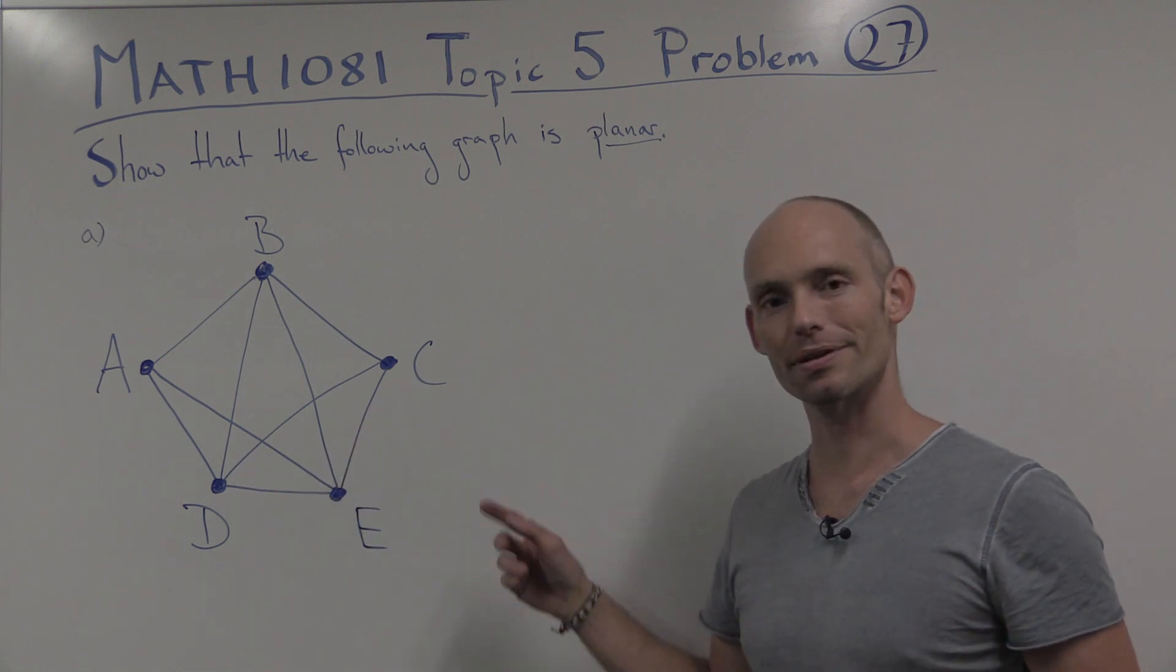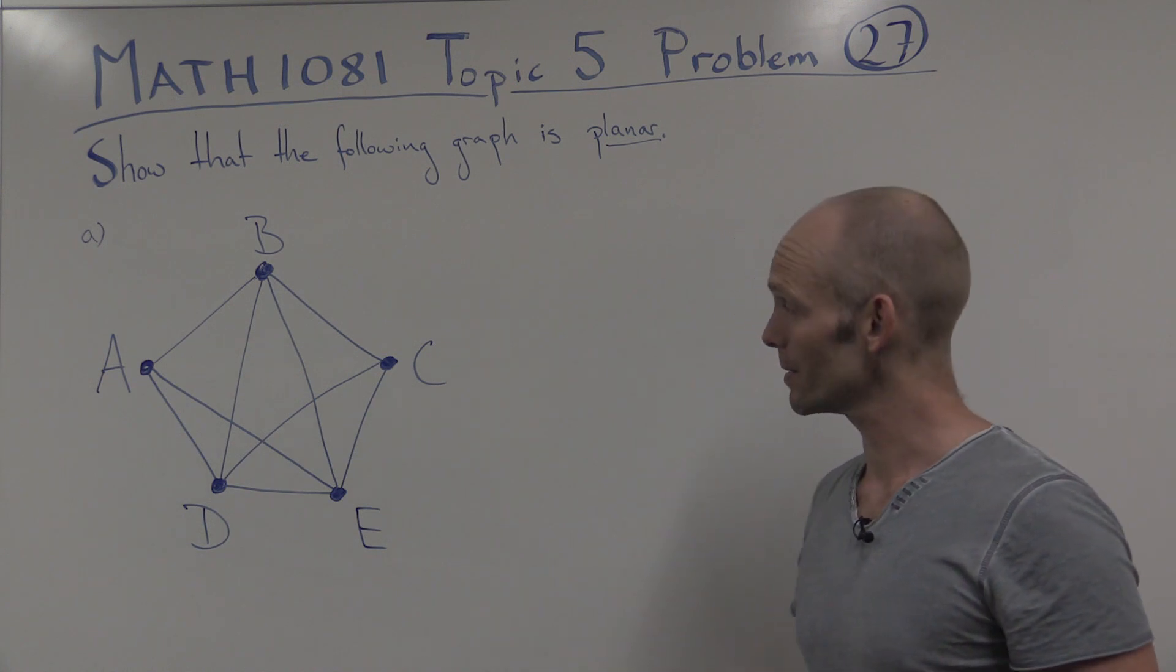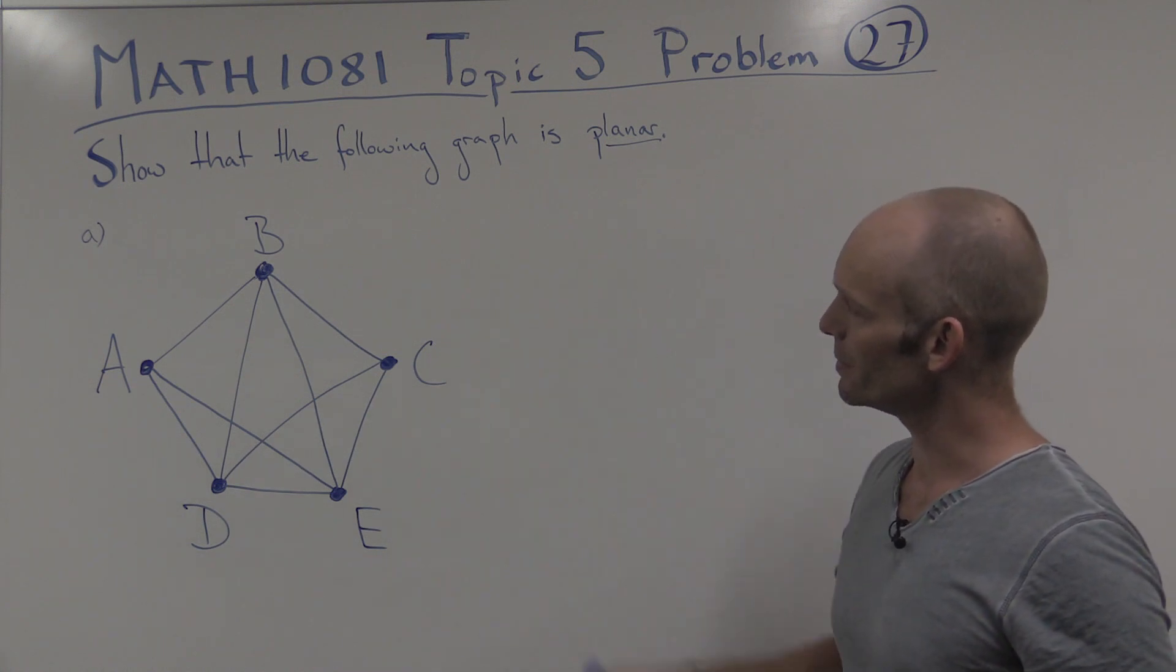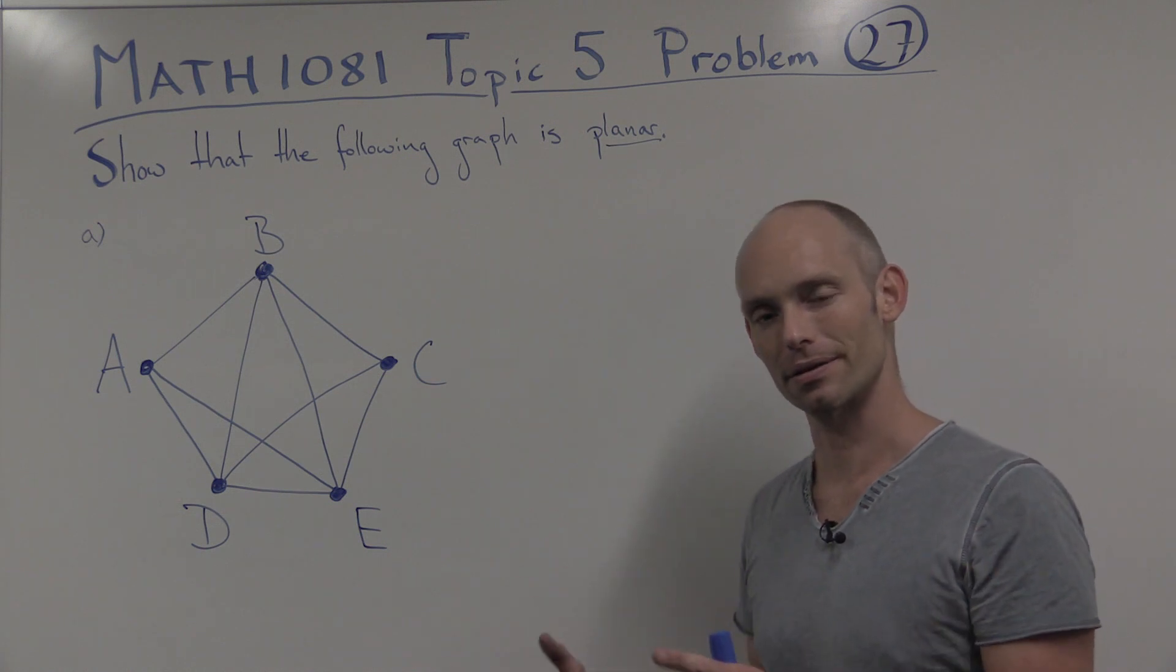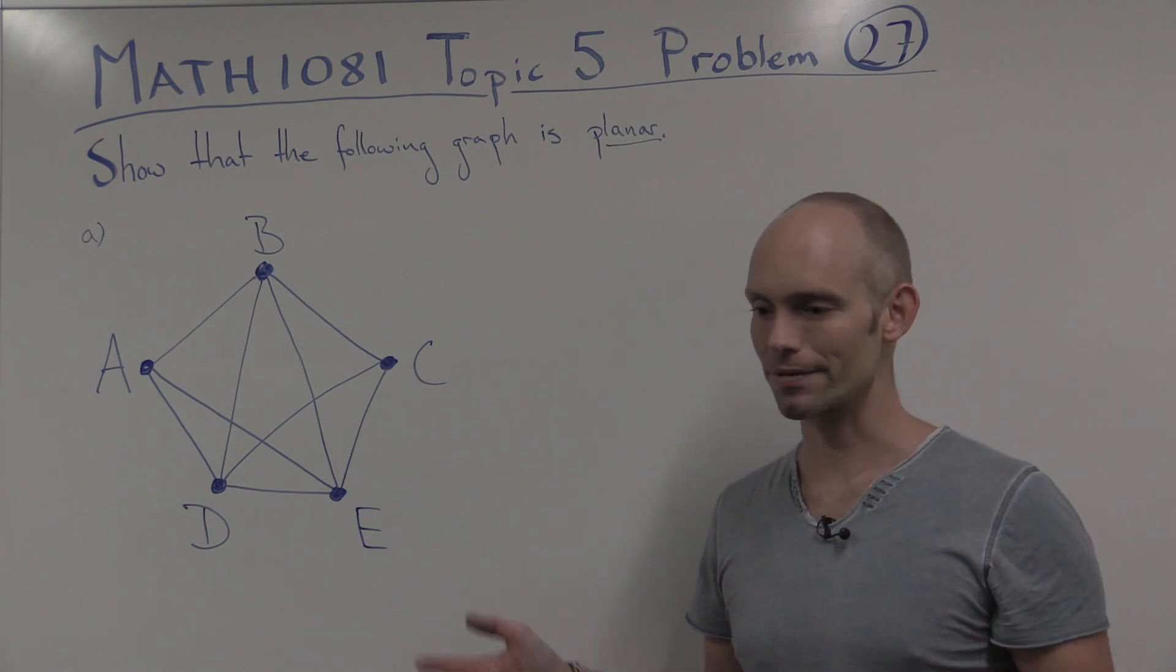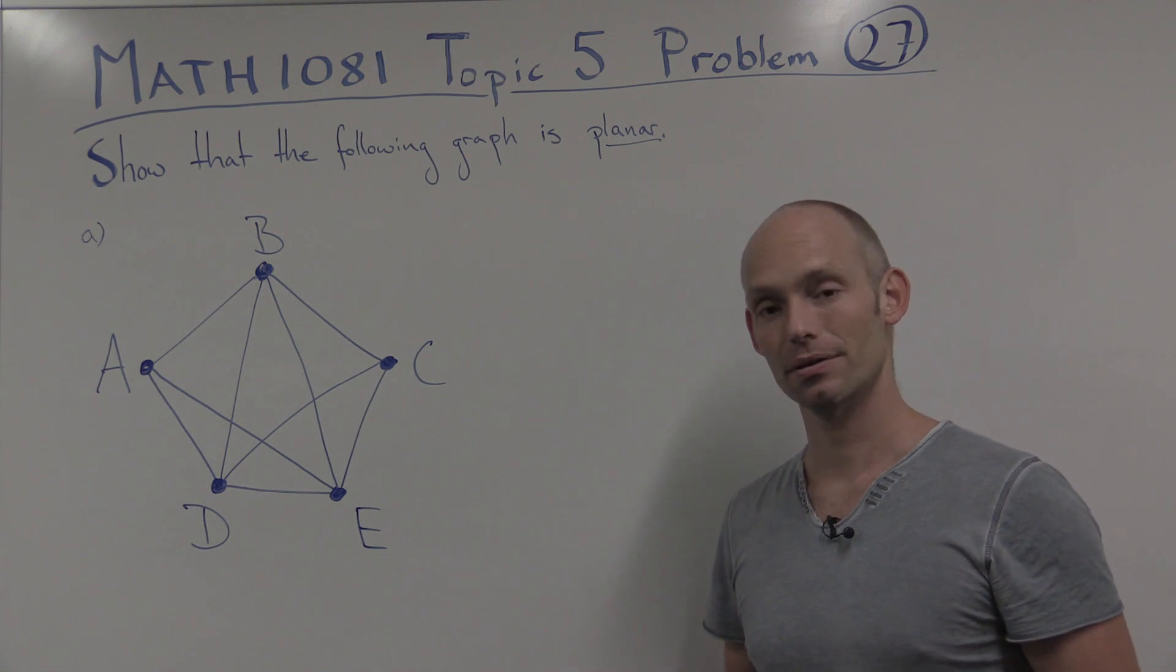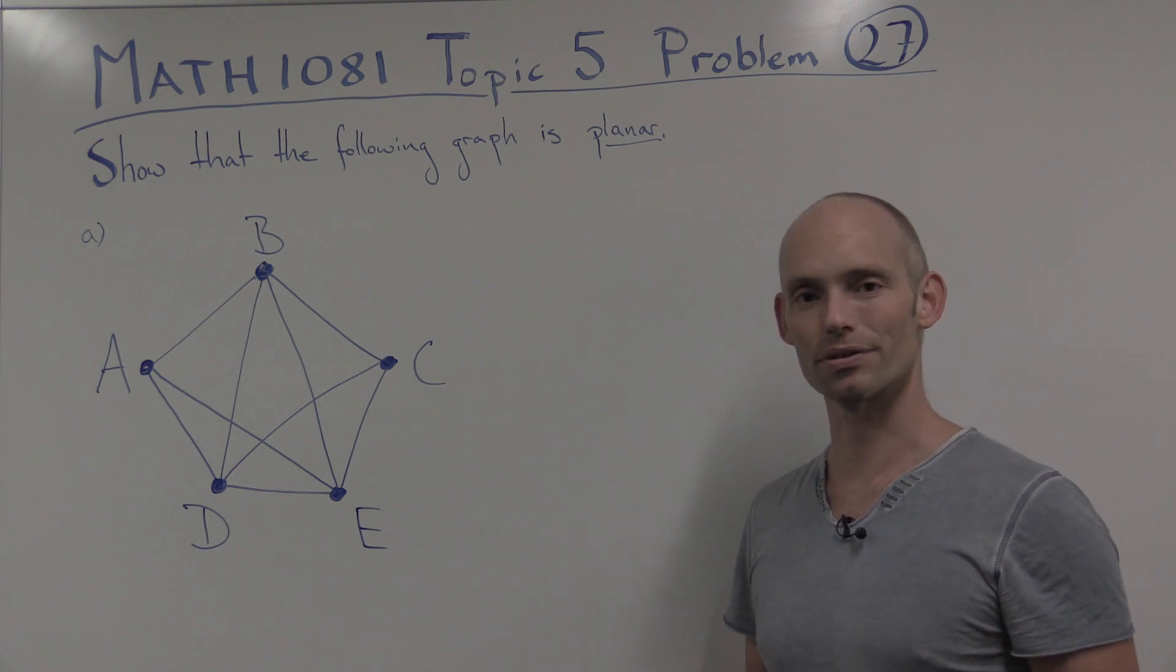So before we do that, I've got two comments to make. The first is about the type of problem that we have here. We have to show that a graph is planar. So then we just redraw it, and that's fine. You could do it in other ways, but that's a simple way to do it.